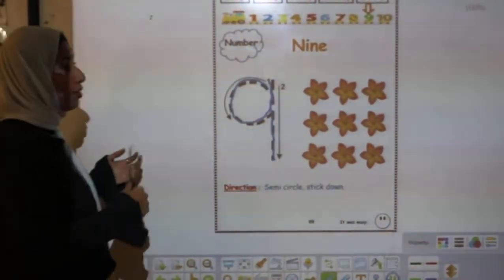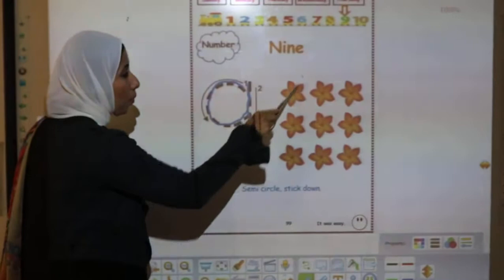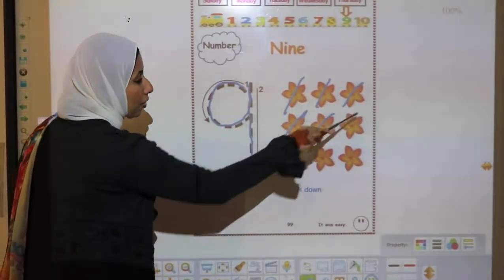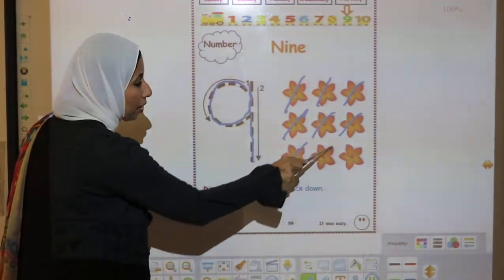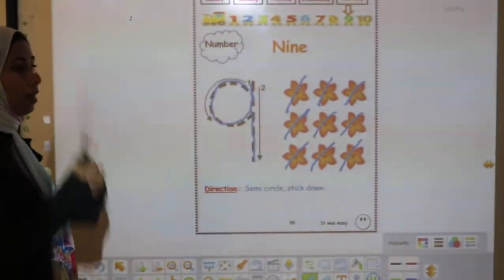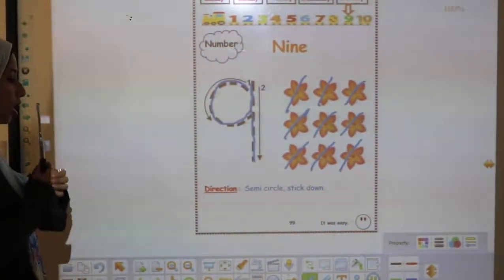Let's count these flowers. 1, 2, 3, 4, 5, 6, 7, 8, 9. So, this is our new number for today. Number 9.